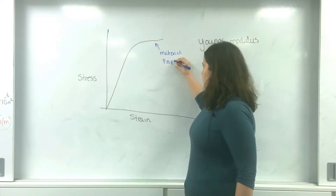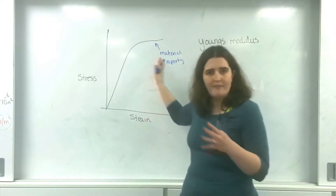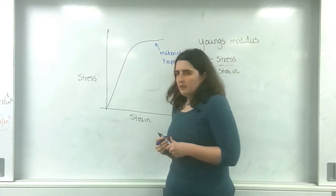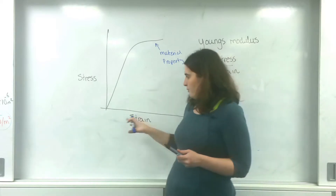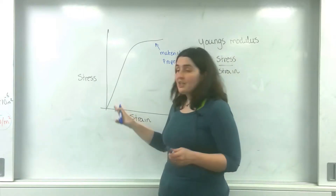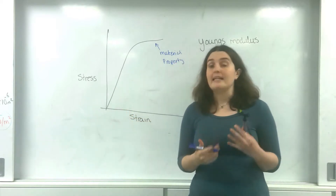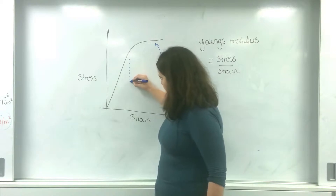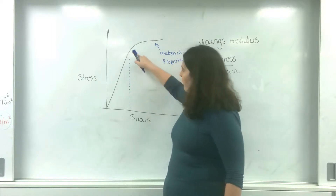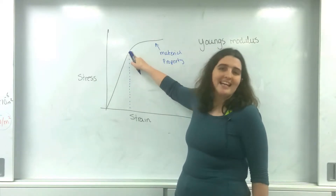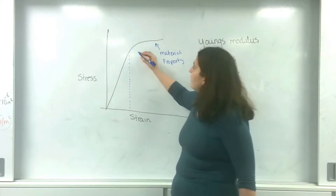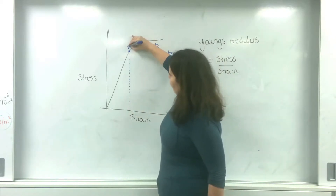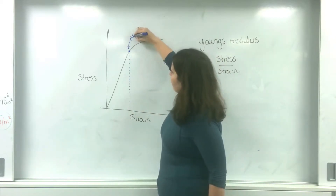So this is one curve that only follows one material. And what Young's Modulus is, related to this, is actually the gradient of the line up until we get deformation again. I'm going to call this, again, the elastic limit.